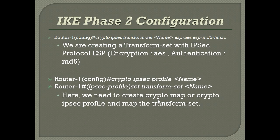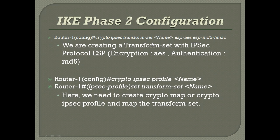Now for the configuration part. First, we create a transform set. A transform set is used for negotiating what type of protocols we are using — the hashing algorithm, authentication, and encryption. The command is: crypto ipsec transform-set, followed by the transform set name and the algorithm. Once given, the IPsec transform set will be created.